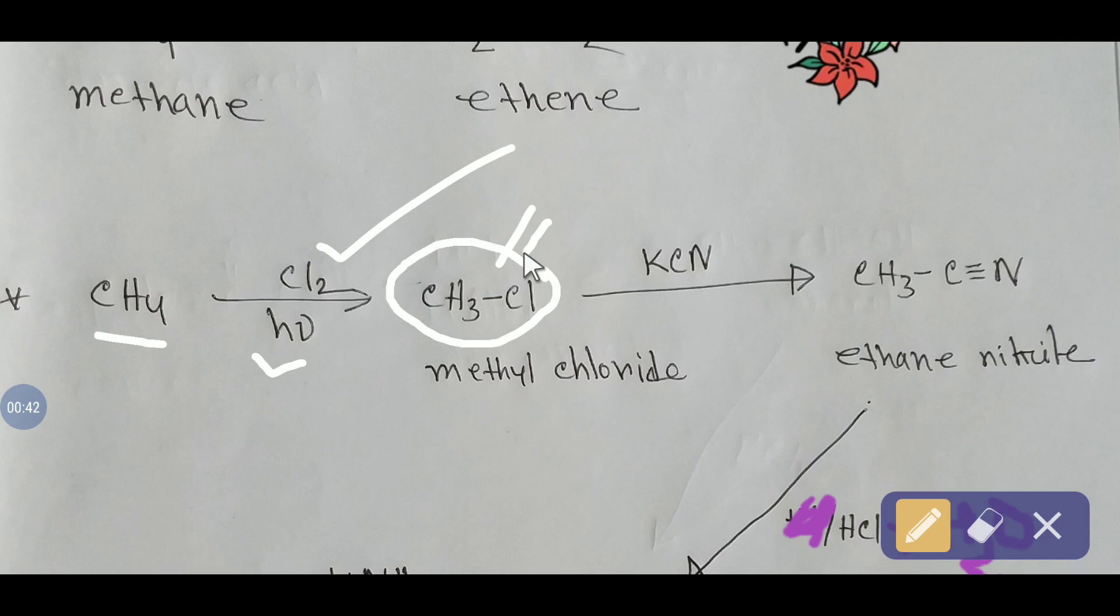Then we have to use potassium cyanide. The chlorine will be replaced by a cyanide group. This is ethane nitrile.